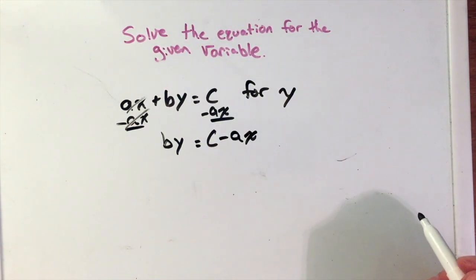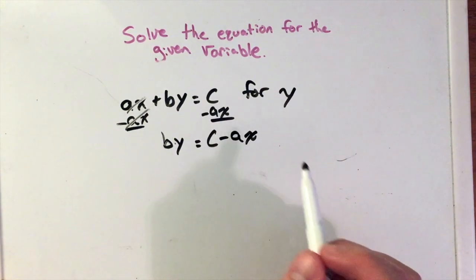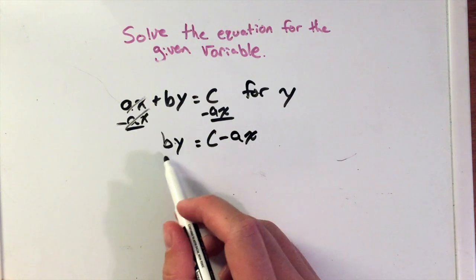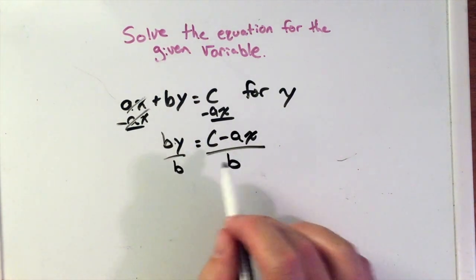Now we have that b times y - again that is multiplication going on there. Just like before, where b was just any number, we would divide by b here to cancel out the multiplication. We make sure we go to both parts here on the right.